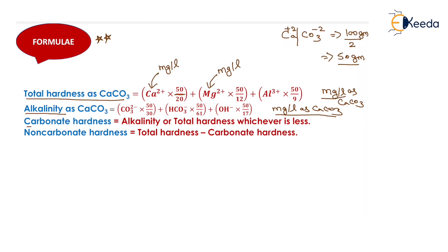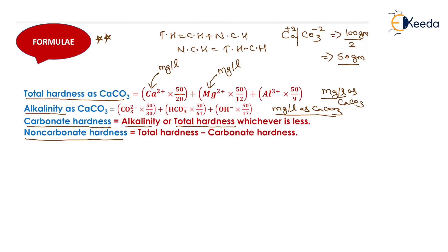Carbonate hardness is the minimum of total hardness and alkalinity — whichever is less is the carbonate hardness. Non-carbonate hardness equals total hardness minus carbonate hardness. This completes the discussion of hardness. Thank you very much, students.